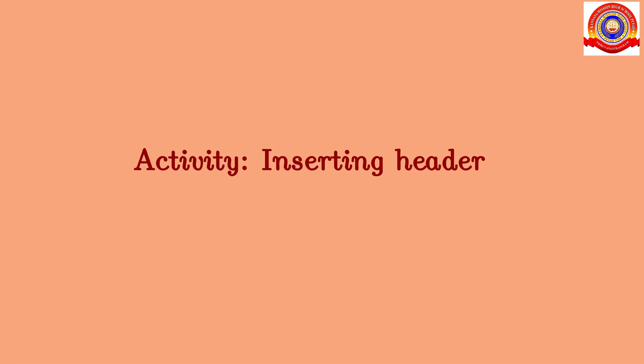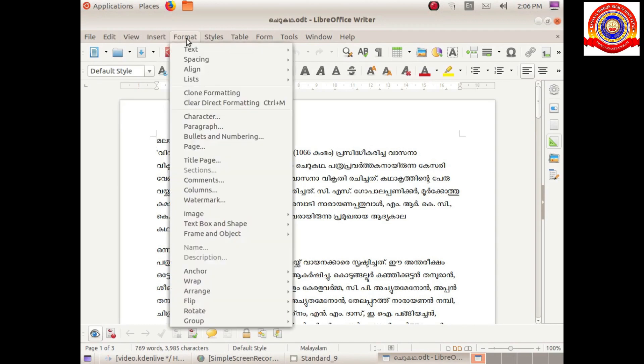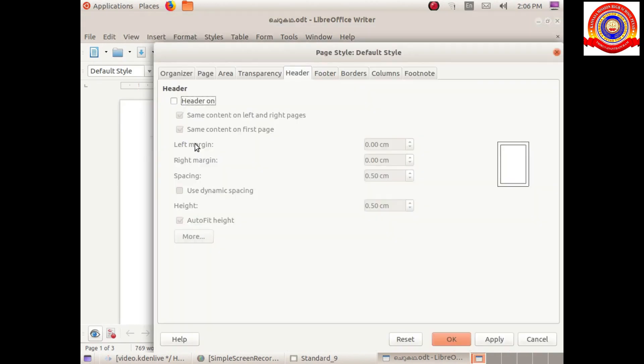Our next activity is to include a header to our document. Do you know what is the header? Header is a heading which appears at the top of each and every page of a document. Here we want to give page number as the header to our document. Let's move to the activity. Click on Format, Page, select Header tab.